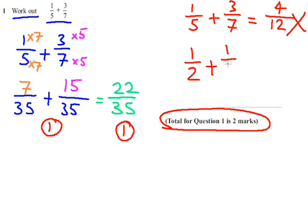If you ever forget, I like to do a half add a quarter. Now we know that's going to be three-quarters. But if you just add the numbers, it gives you two-sixths, and you know that's wrong.